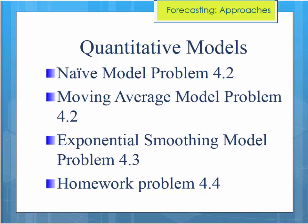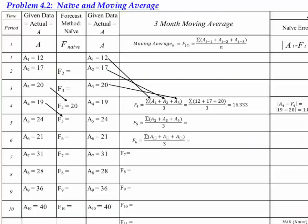The naive model just takes last month's demand, and that becomes the forecast for this month. So what you see in front of you is the handout from class the other day, and you'll notice that we've got a column of data here, which is the actual demand, and then we're going to be doing our naive model forecast right here in this column. All we do is take last period's actual demand, and that becomes our forecast for this next period. So 12 goes here.